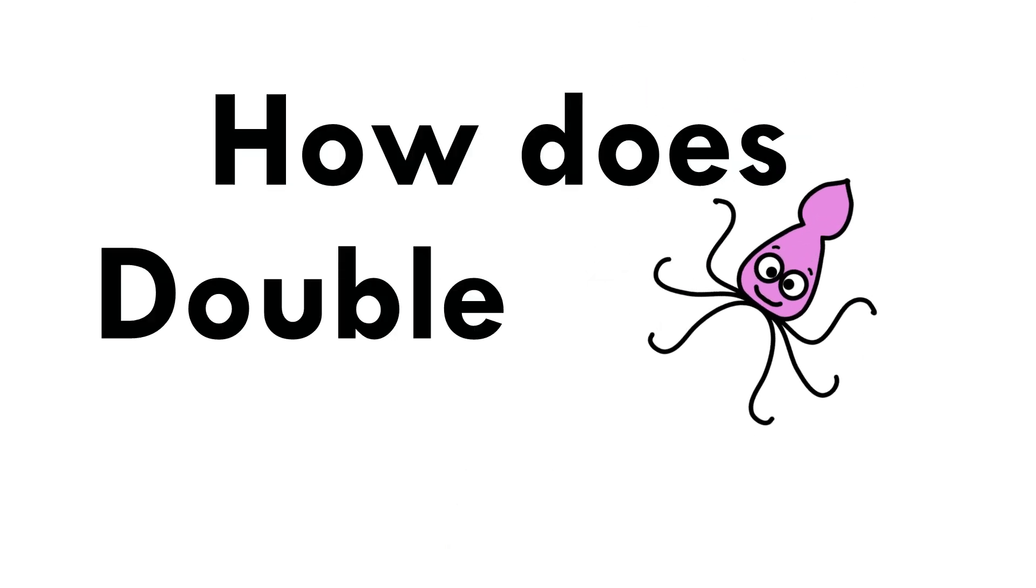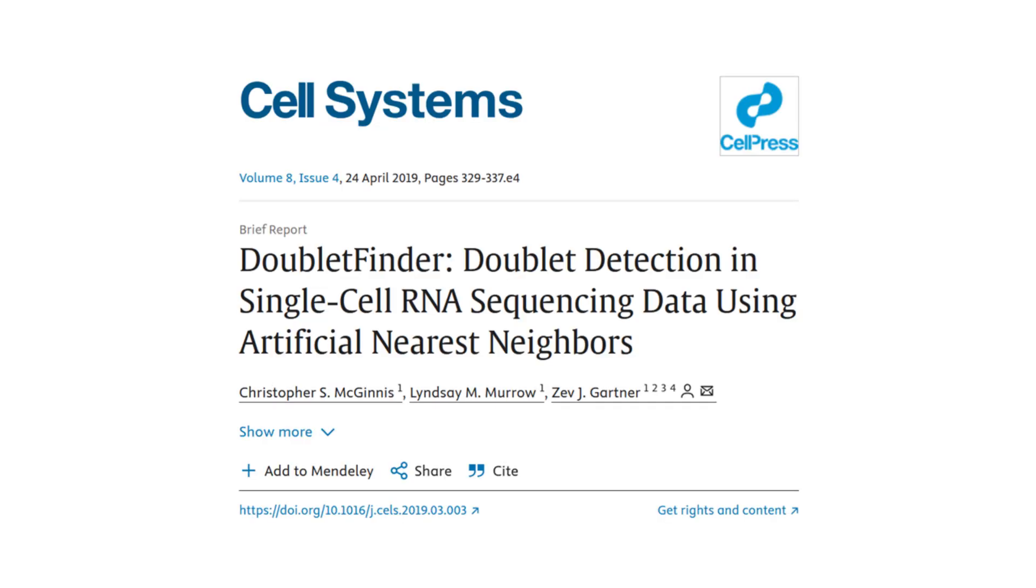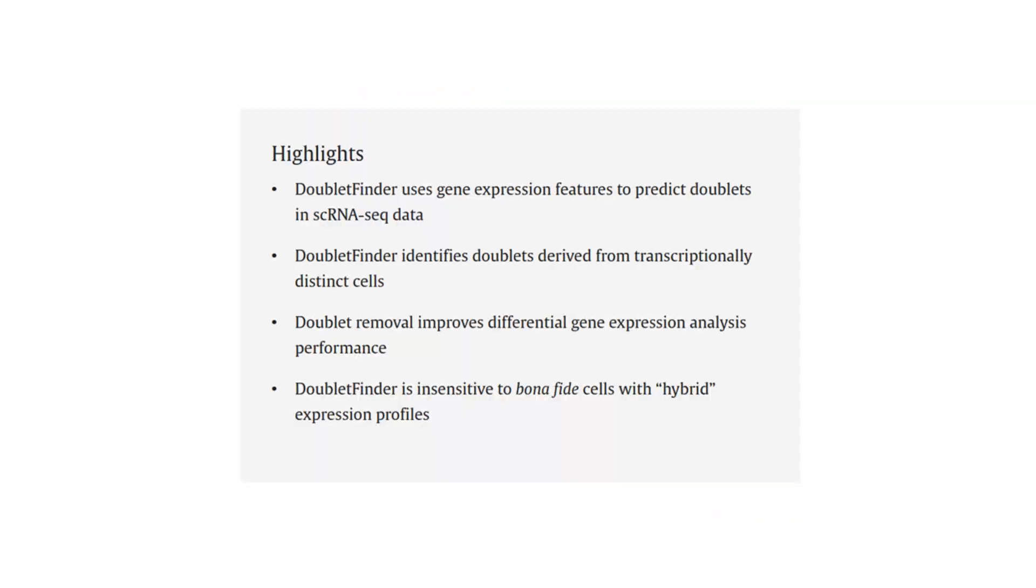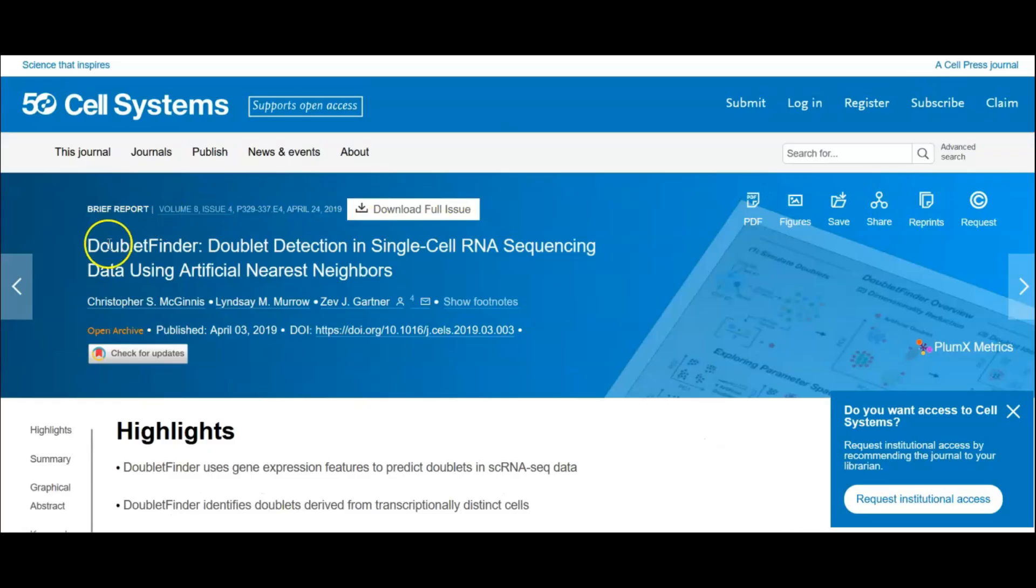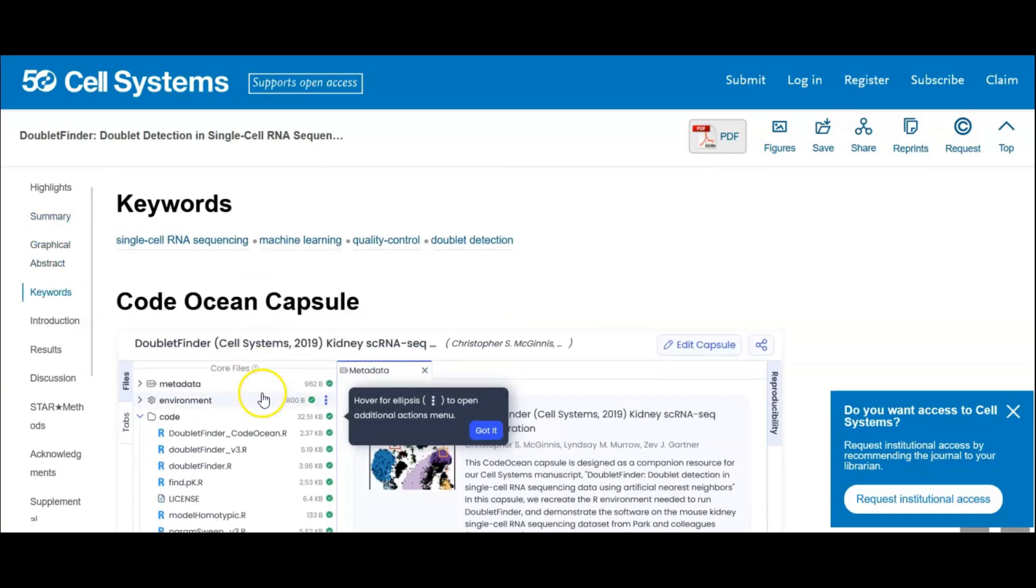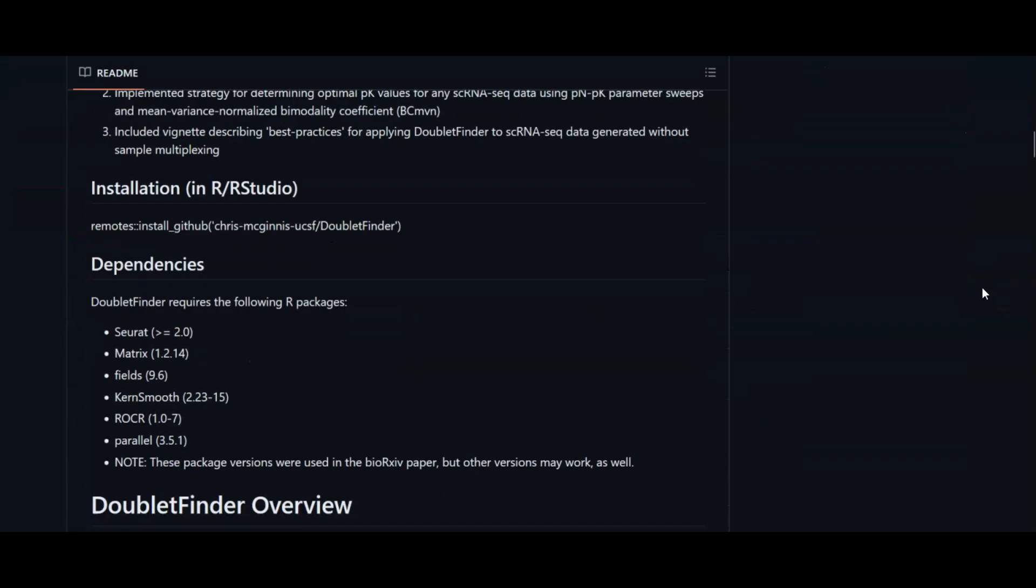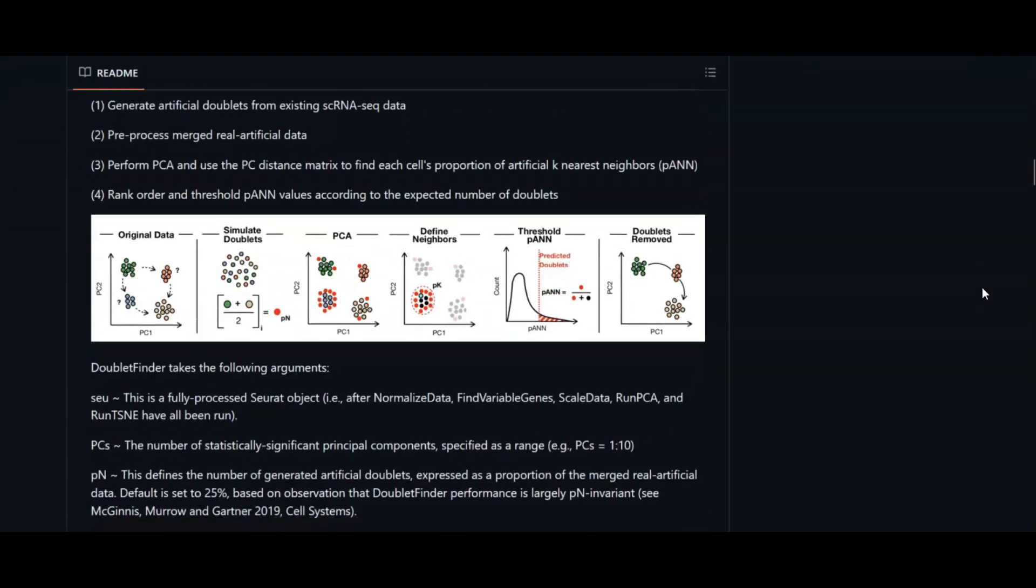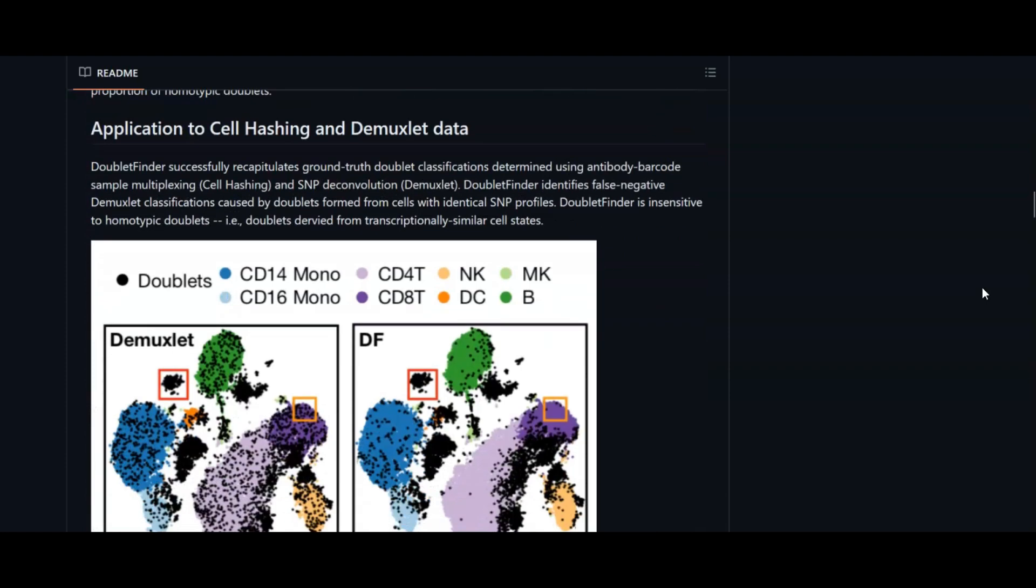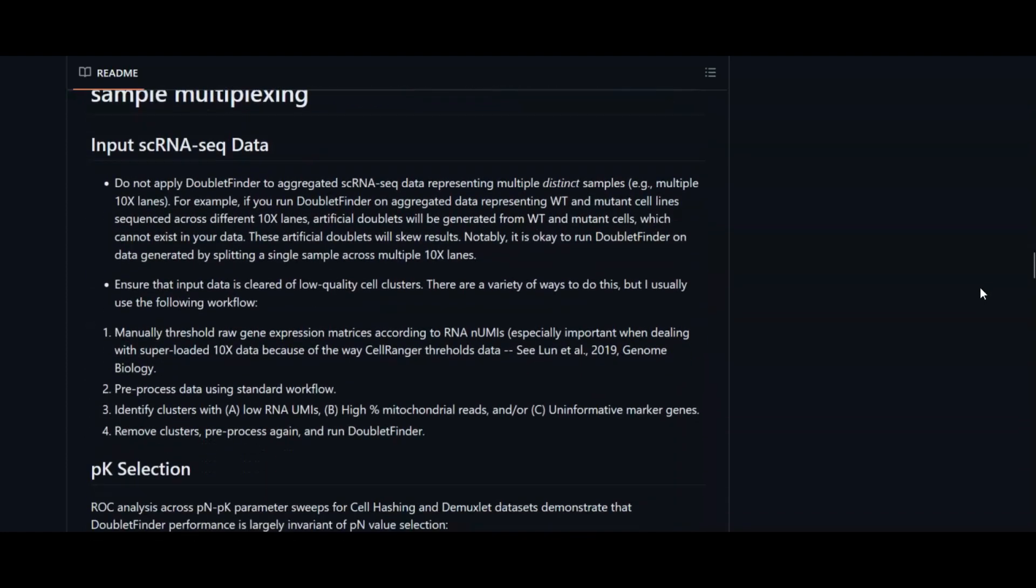Hi and welcome to Biostat Squid. In this video we'll learn how DoubletFinder works. DoubletFinder is an R package that predicts doublets in single-cell RNA sequencing data. It's implemented to interface with Seurat, so it's one of the most popular tools for doublet detection in single-cell RNA sequencing data. I encourage you to read the paper and GitHub pages if you want to find out more, but I will summarize the main points of this tool. So if you're ready, let's dive in.